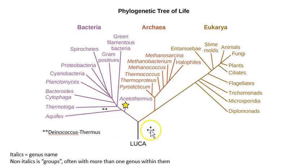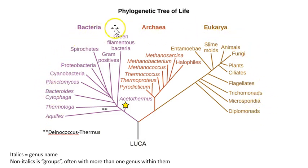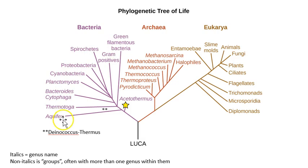Looking at the three domain tree of life, which you should see regularly in your biological studies, the very base of the tree is the last universal common organism — now extinct. The organisms represented on the tips or leaves of the tree are alive and we can study them today. This is a sketch of the overall three domain tree, and in fact there are many more phyla or categories for each of these major domains than shown.